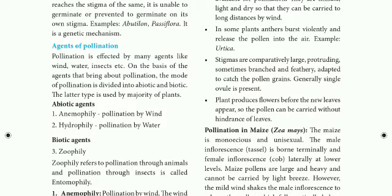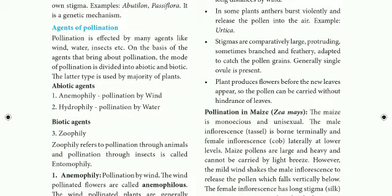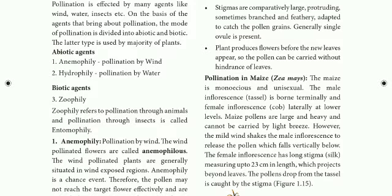We will classify two types of agents. Biotic agents involve living organisms — this is called Zoophily. Abiotic agents are non-living: pollination by wind is Anemophily, and pollination by water is Hydrophily. Zoophily refers to pollination by animals, and pollination specifically by insects is called Entomophily.